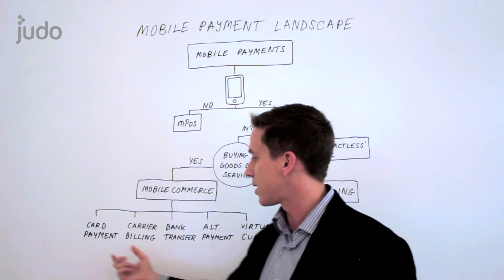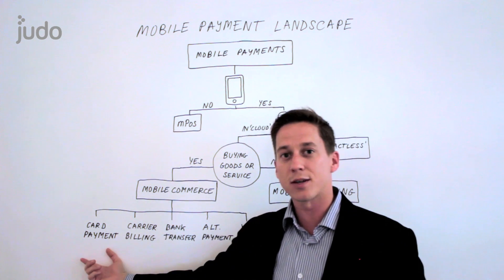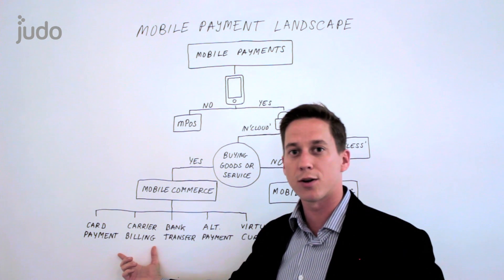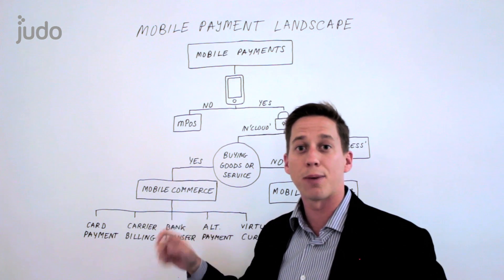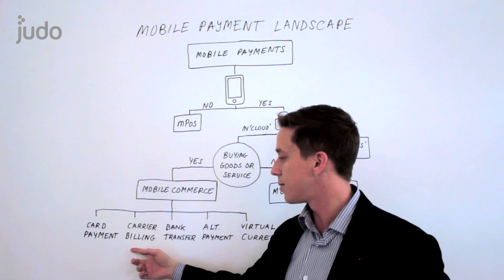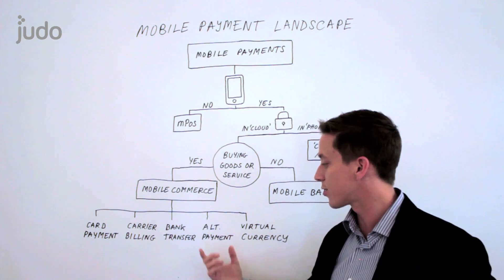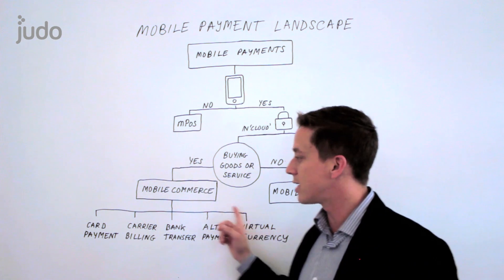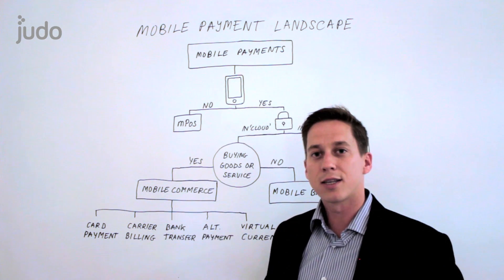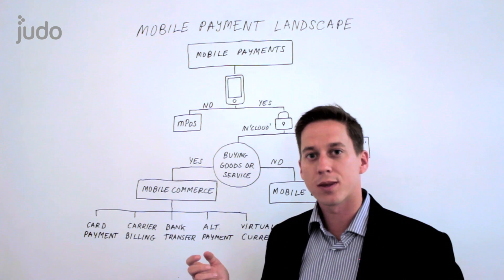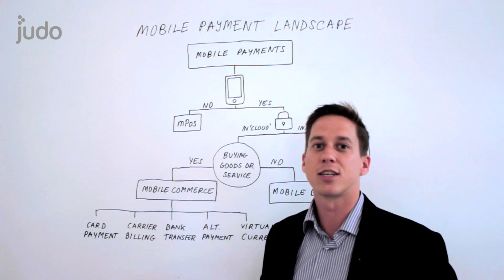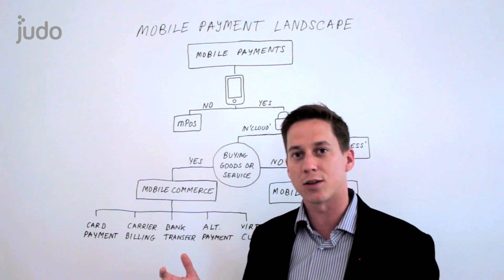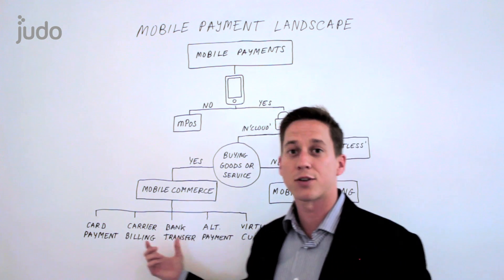Coming down to mobile commerce — Visa and MasterCard are the typical players in card payments. Carrier billing is often done by a company called Boku, probably the best known, and it allows you to buy something with one tap and have it billed to your mobile phone bill. Bank transfer varies by market; alternative payments is primarily PayPal; and virtual currency is Bitcoin. The problem being solved across all of these is that when you're on a small device like a mobile phone, you have to change the way you think about engaging in a transaction. It needs to be faster, easier — you need to remove the friction because it's more difficult to enter lengthy details. All of these different payment methods are looking to simplify that.